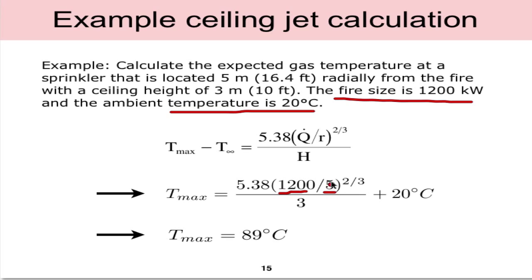We also bring the T infinity to the other side and add it in, we get a temperature, maximum temperature at that point of 89 degrees celsius.